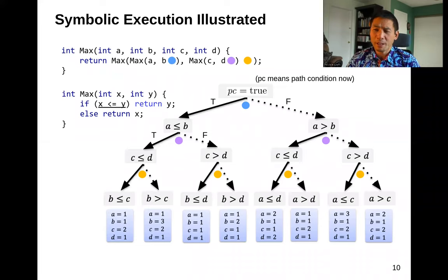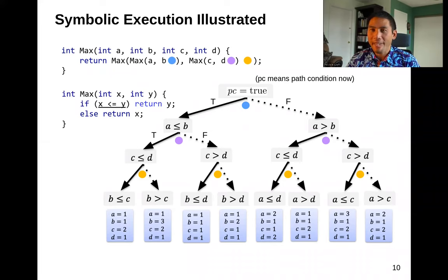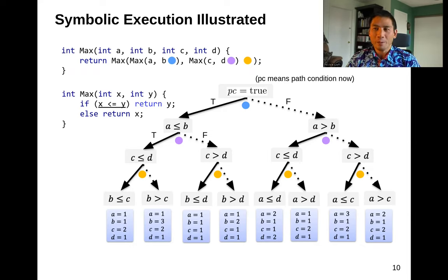We have a bunch of examples of symbolic execution. Here's another one. We have max with four numbers that calls max with two numbers. What we want to verify is this function that does max on four numbers — it calls max on two numbers twice. We'll color code this to indicate which is which.